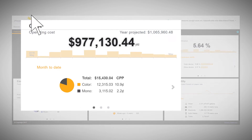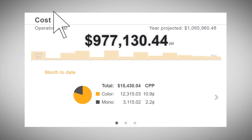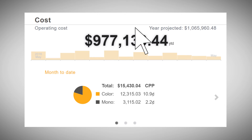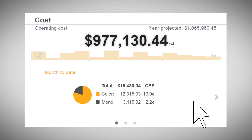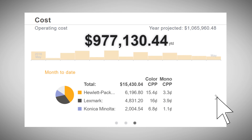For example, you can easily view your monthly and year-to-date output costs, as well as your annual projected costs, broken down by color and monochrome, and by device type.